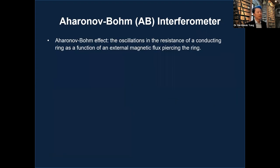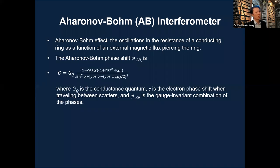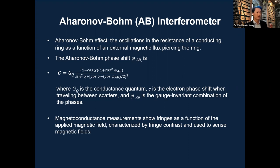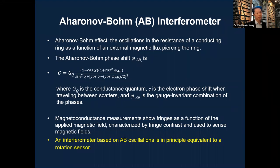We propose an alternative approach: the Aharonov-Bohm effect. This involves oscillations in the resistance or conductance of a conducting ring as a function of an external magnetic field applied orthogonally to the ring. You can obtain a phase shift vs. conductance relationship — measure the conductance, extract the phase shift, and relate it to the applied magnetic field. You measure magnetic conductance or magnetoresistance, which shows fringes as a function of applied field characterized by fringe contrast, used to sense the magnetic field.